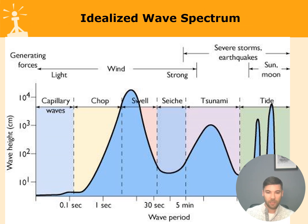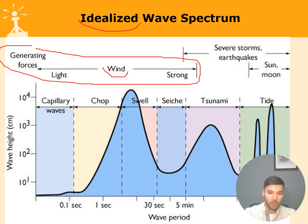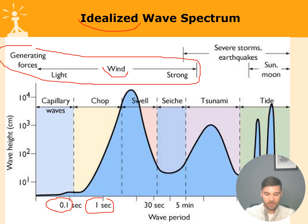Let's have a quick look at the wave classification table — be careful, this is an idealized table so figures may differ in real life. For the first four wave types, the generating force is wind: capillary waves have the shortest period of about 0.1 seconds, chop is one second and more, and swell has a period of around 30 seconds. From experience in the Atlantic Ocean, swell typically has a period of around 10 seconds.